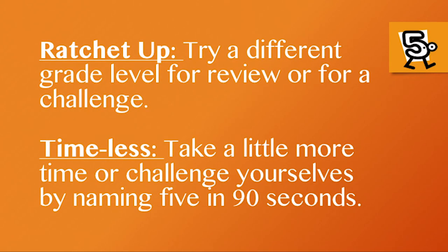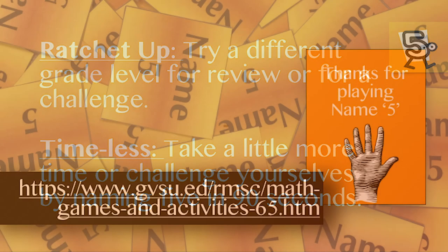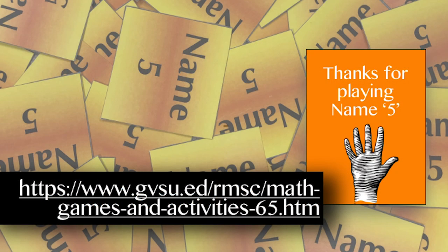Here are a few variations of Name 5: Ratchet Up and Time Less. Teams looking for more of a review or more of a challenge can try naming 5 for a different grade level. Teams can also take a little more time naming 5, or they can challenge themselves by naming 5 in 90 seconds.